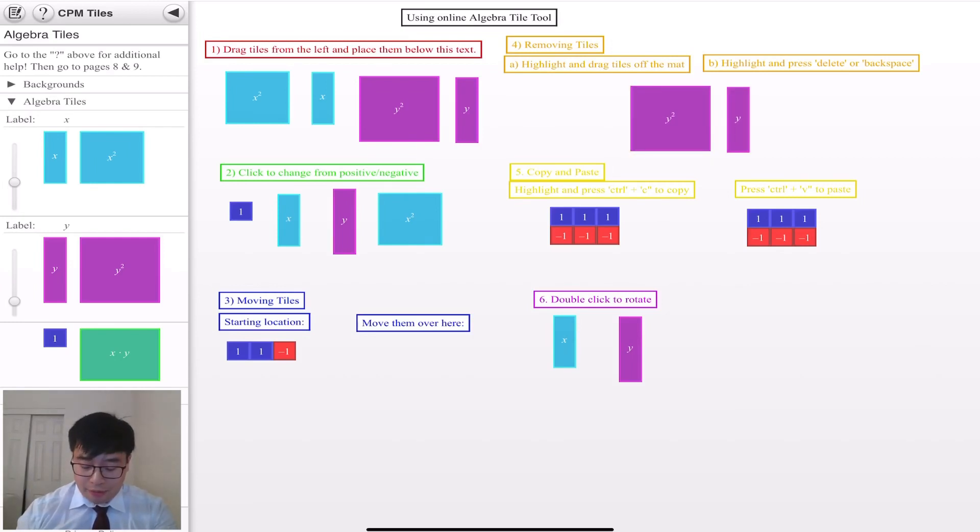And finally, the last thing you guys can do with this tool is rotate these tiles. So if I double click these tiles, they're going to rotate 90 degrees. Wee. Oops. Oh, and you see what happened there. If you don't click on it quickly enough, it won't rotate. It would just change to the opposite side. So make sure you guys click on it quickly. Okay.